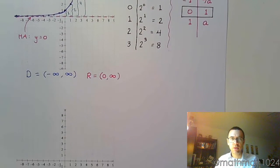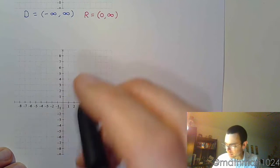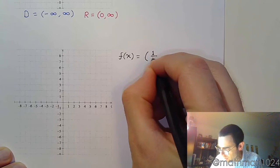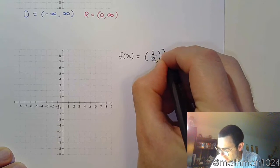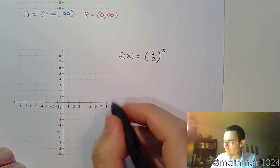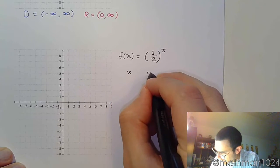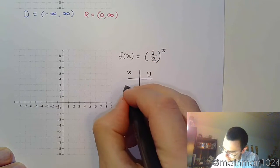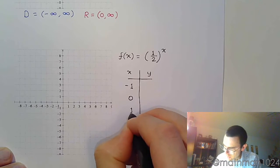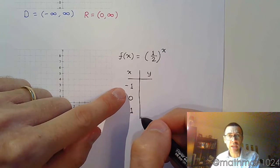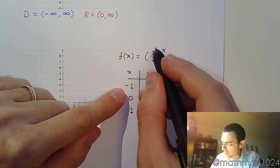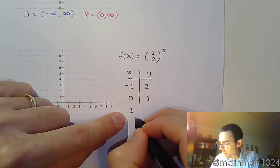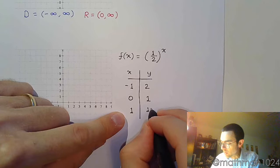The other exponential function I want us to look at is very similar to what we just saw, but instead of a base of 2, let's look at a base of 1/2. So if I make my t-table of values -1, 0, and 1. When I plug in -1, I'm supposed to get the reciprocal of the base, so the reciprocal of 1/2 is 2. If I plug in 0, I get 1. If I plug in 1, I get just the base itself, so I get 1/2.